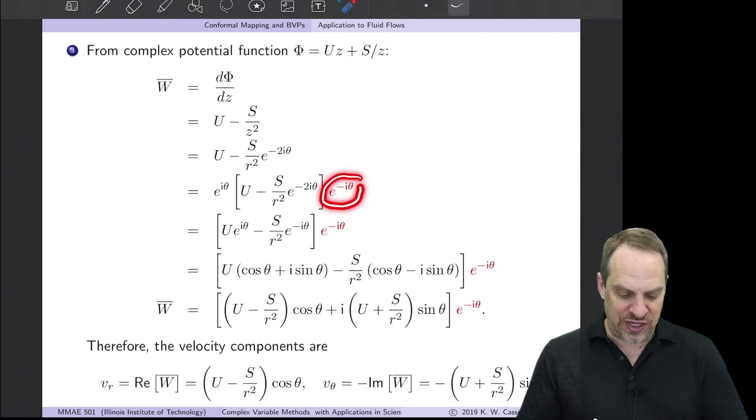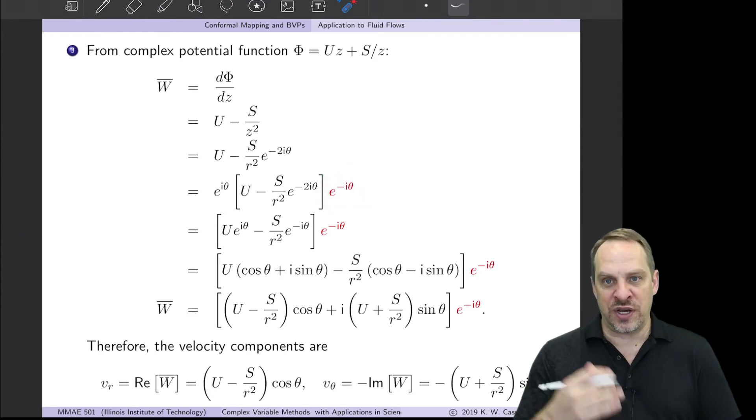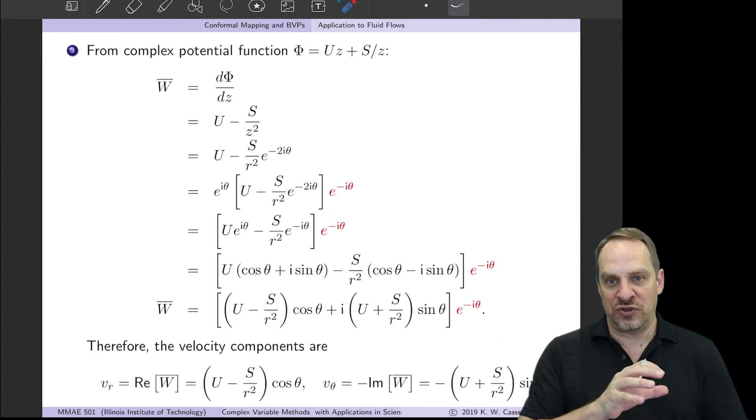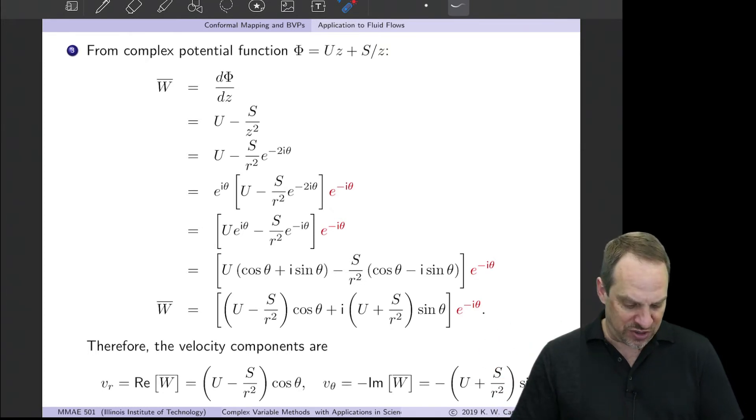I don't have an e^(-iθ) factor in both terms, so what I'm going to do is multiply and divide by it, so I'm not changing the result. But now I'm going to keep this highlighted in red so you can see it just coming along for the ride. We just have to remember to take that out when we extract the real and imaginary parts. So then I have e^(iθ) times this U - S/r²e^(-2iθ). Bring the e^(iθ) into both terms.